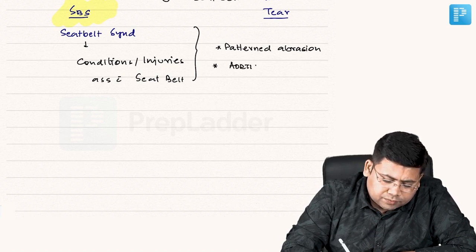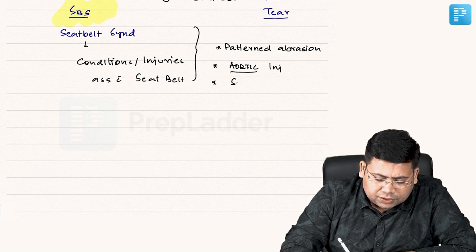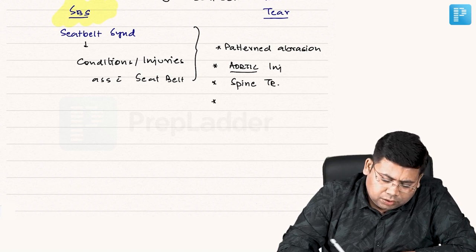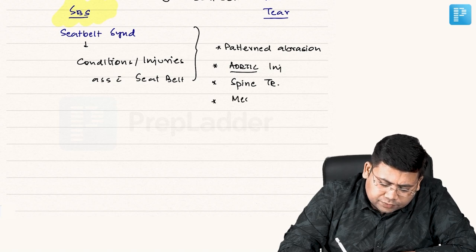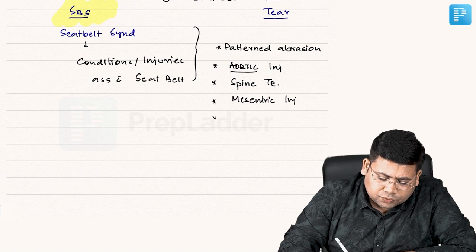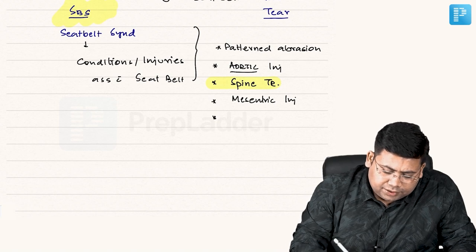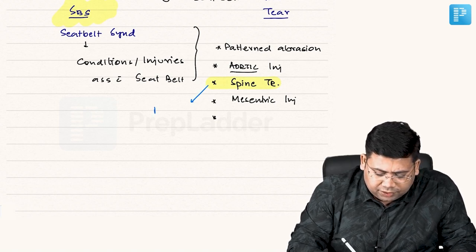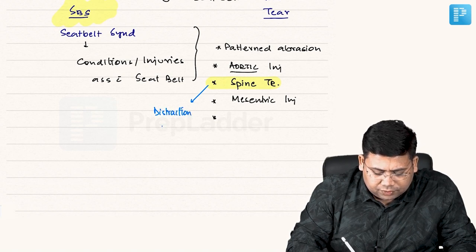It can be associated with spine trauma, with mycentric injury. When we talk about spine trauma, what kind of trauma is associated at the level of spine? Distraction type of injury. Remember, it can be associated with distraction injury.